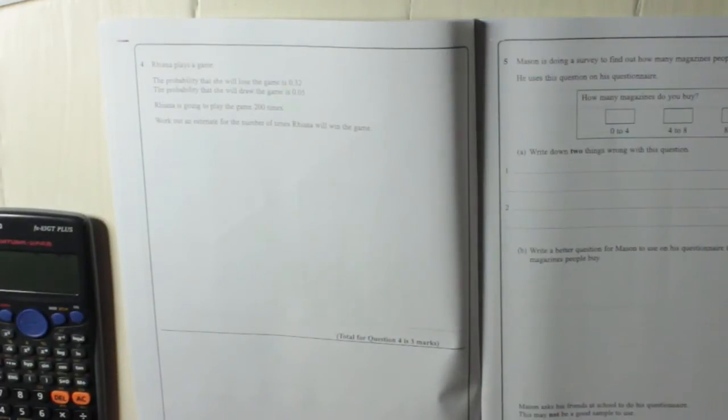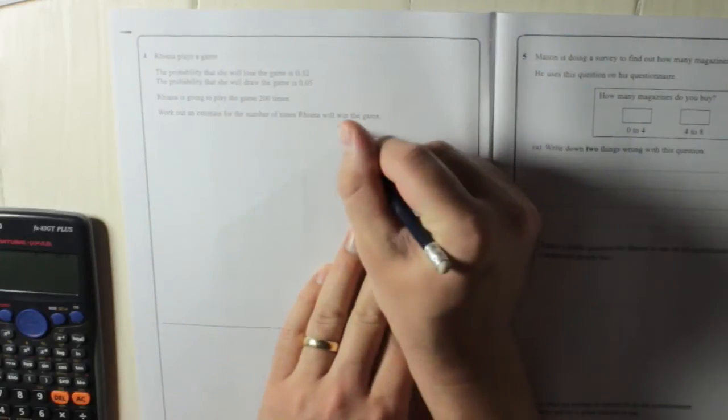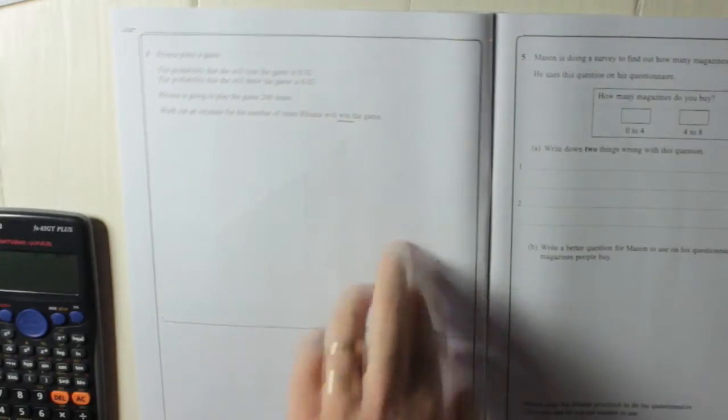Question 4. Rihanna plays a game. The probability that she will lose the game is 0.32. The probability that she will draw the game is 0.05. Rihanna is going to play the game 200 times. Work out an estimate for the number of times Rihanna will win the game.